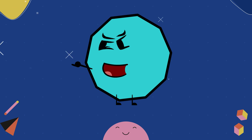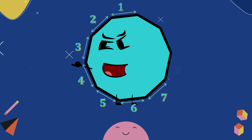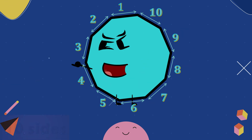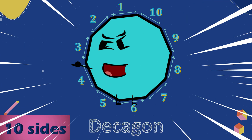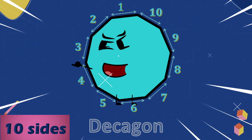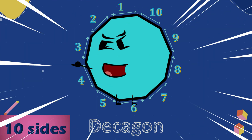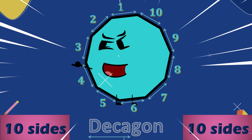Let's count the number of sides. One, two, three, four, five, six, seven, eight, nine, ten. Ten sides. Ten sides is Decagon. Deca means ten. Decagon. Let's do that again. Ten.